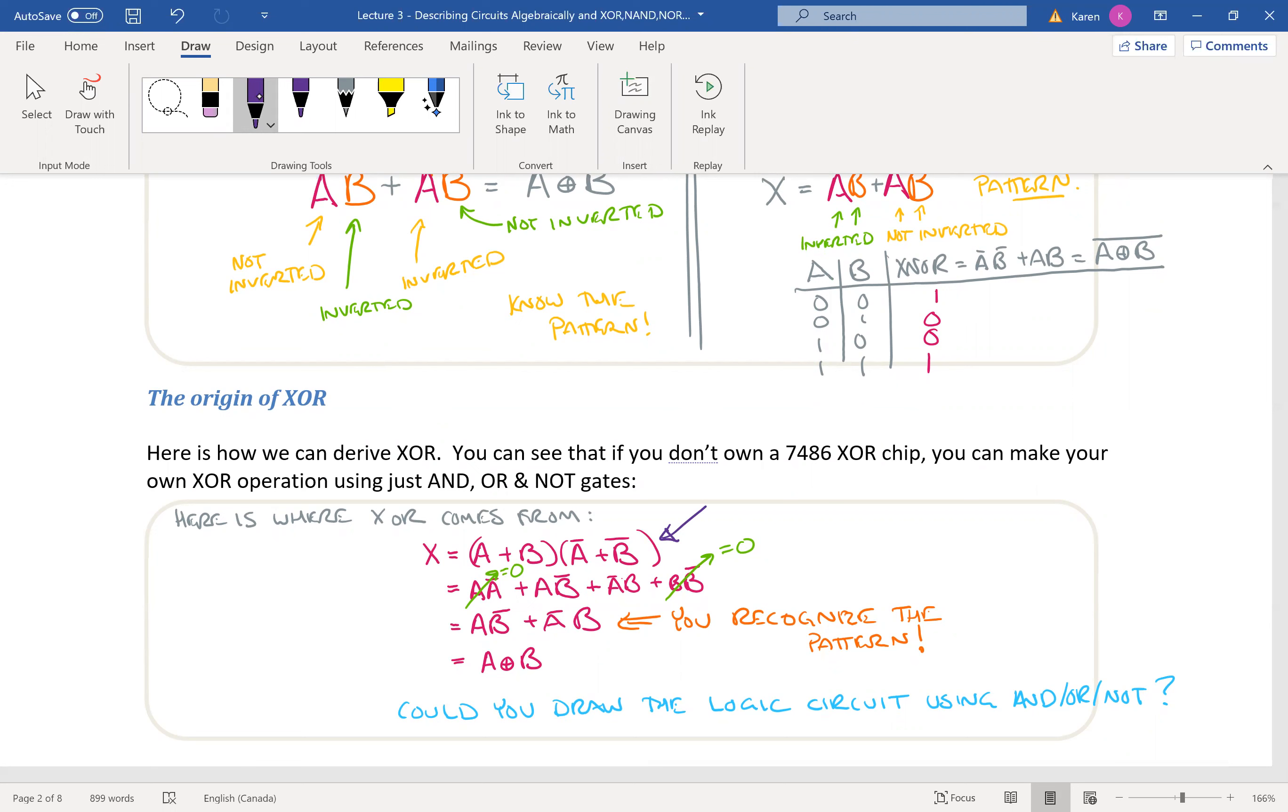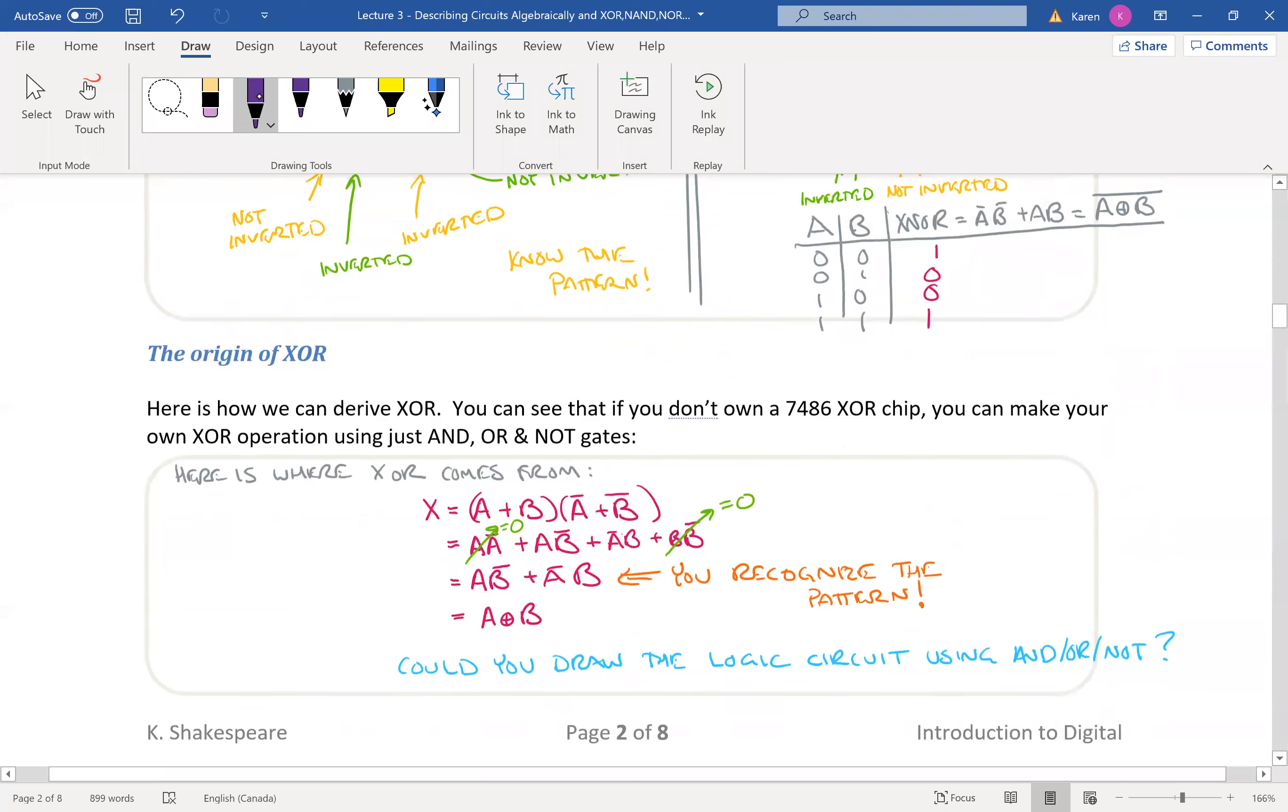And then those combinations are ANDed together. You could build that, right? You know how to build this circuit. But when we put it together in this format, we commonly give it a new name: A exclusive OR B. So I'd like you to think to yourself, can I build that circuit?